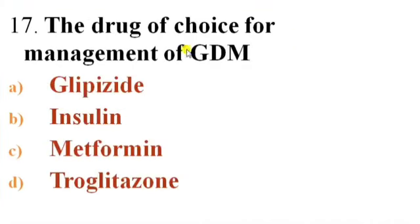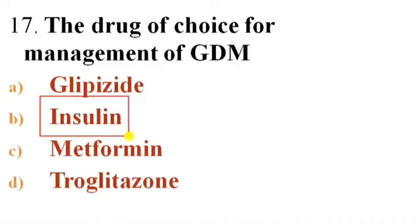Next question: The drug of choice for the management of gestational diabetes mellitus. Options: A) Glipizide, B) Insulin, C) Metformin, D) Troglitazone. Answer is B — Insulin. The drug of choice for GDM management is insulin. Oral antidiabetic drugs used in pregnancy are not safe because they can cross the placenta.